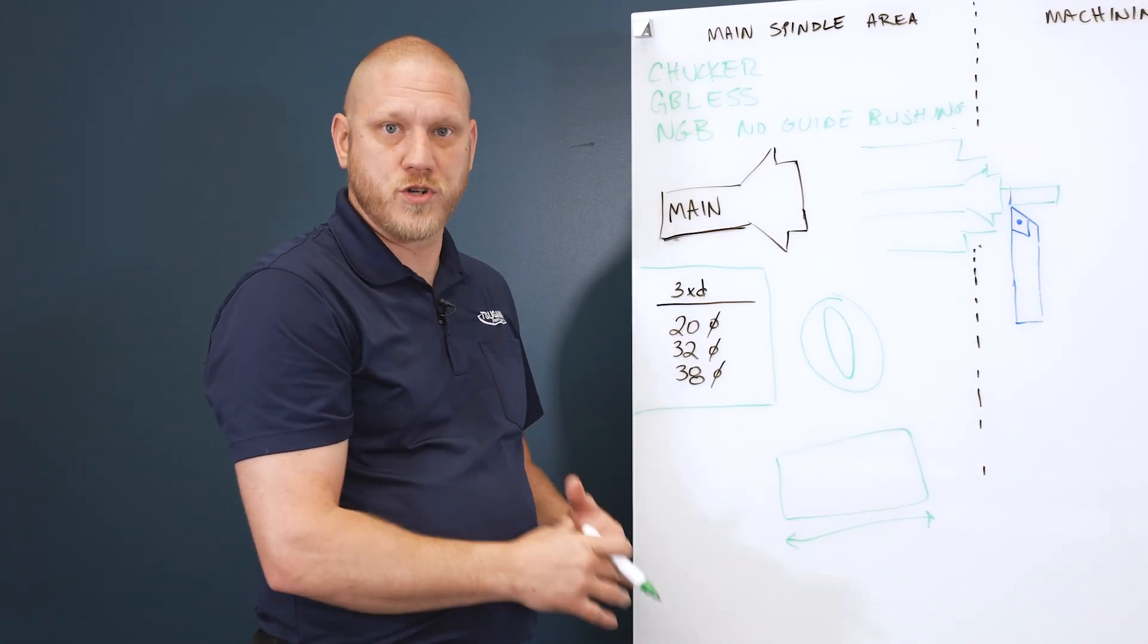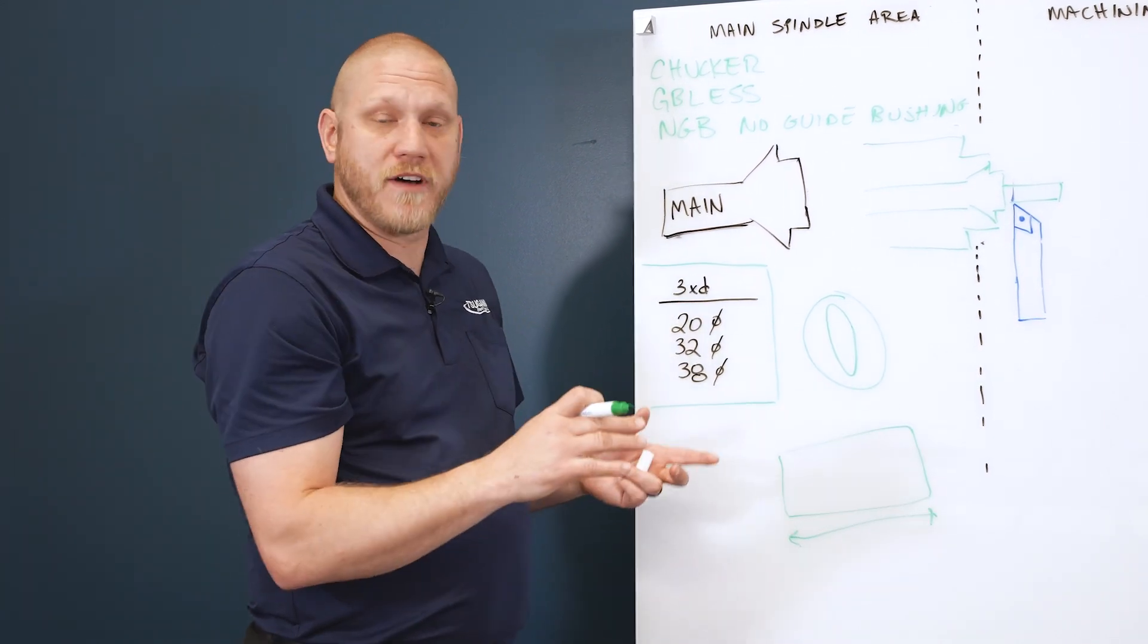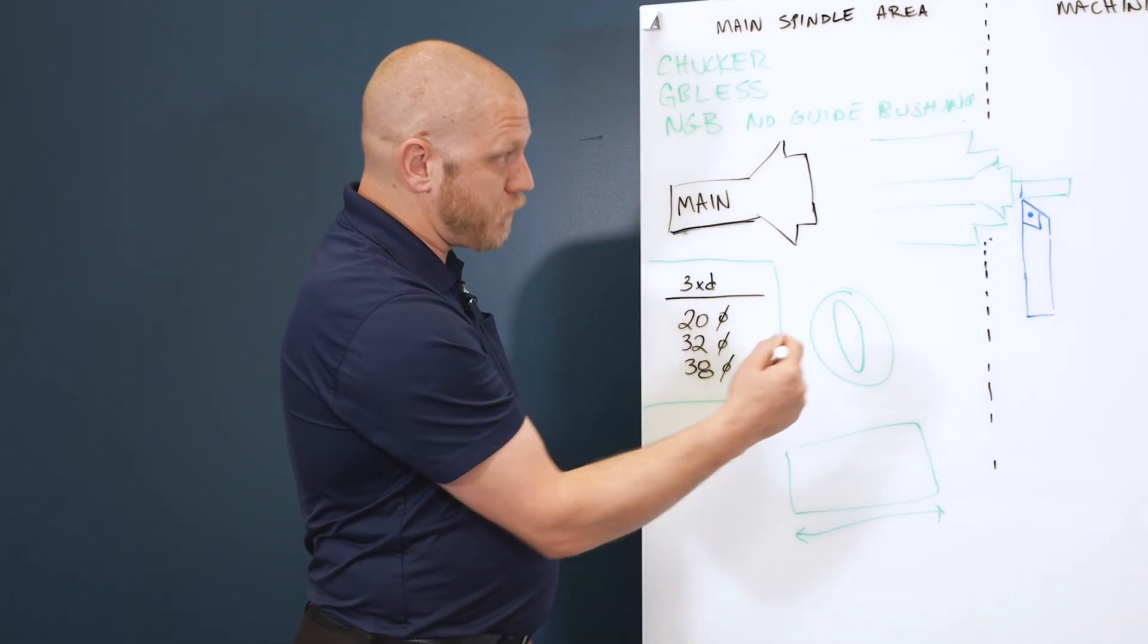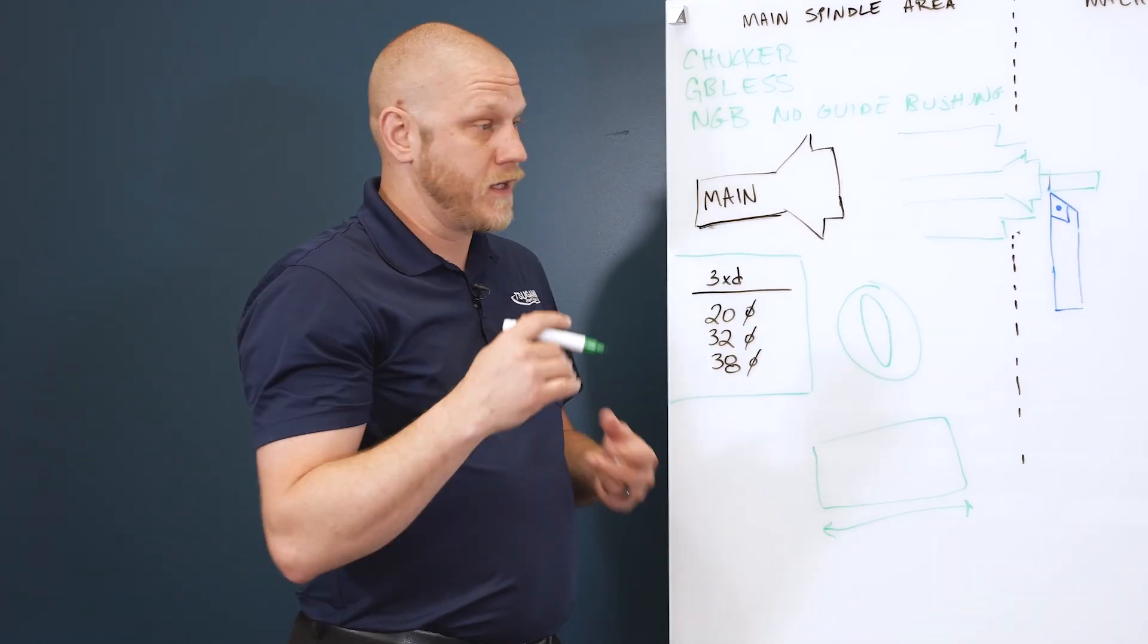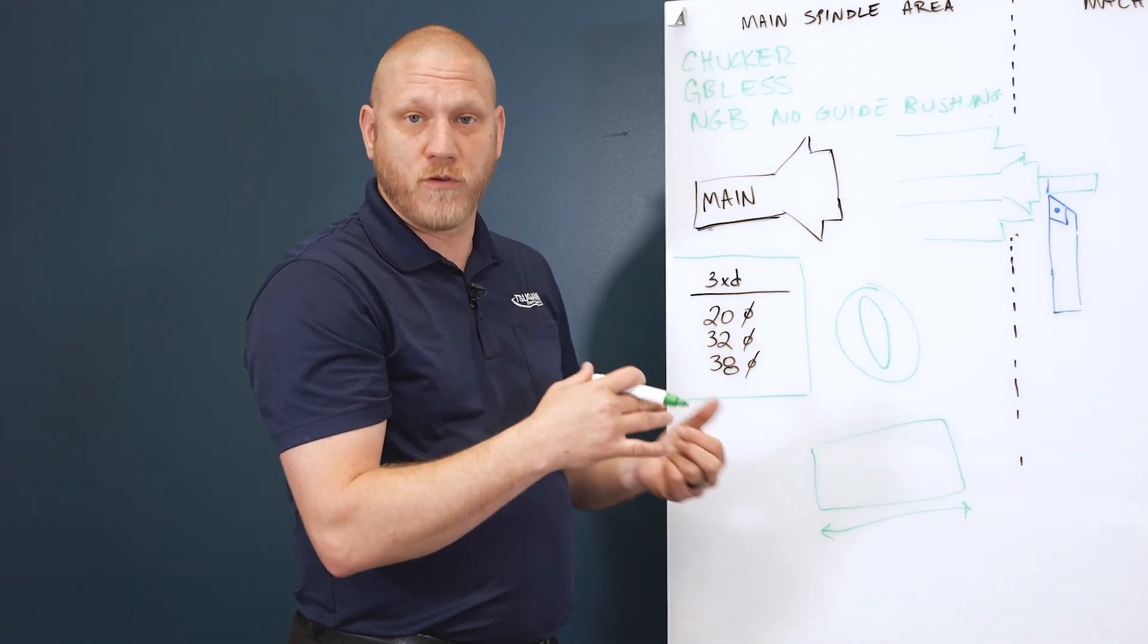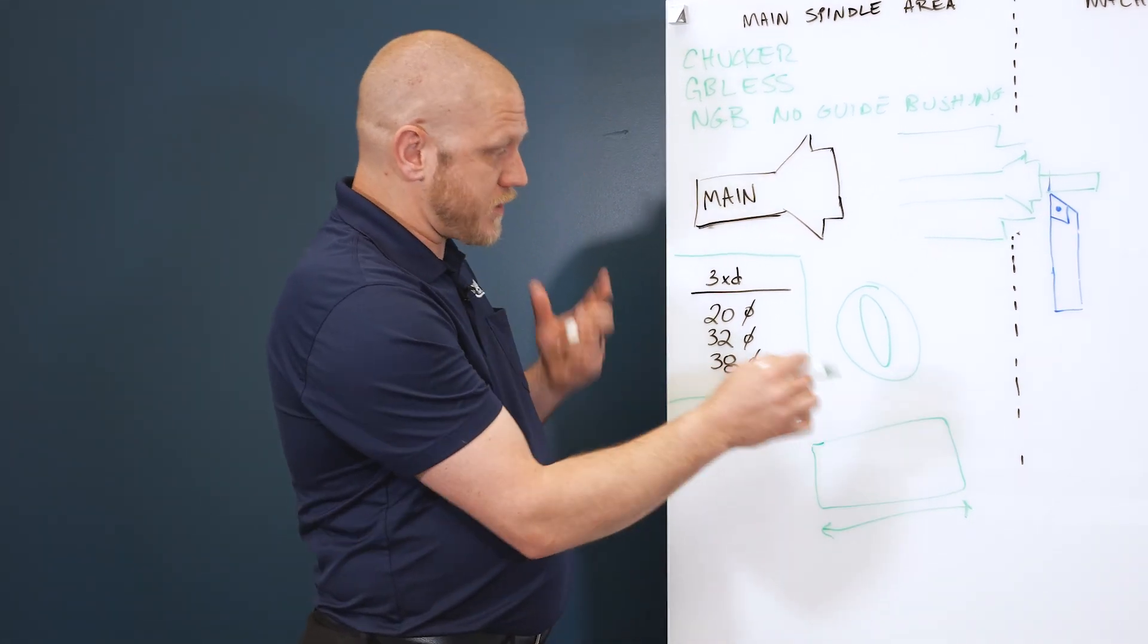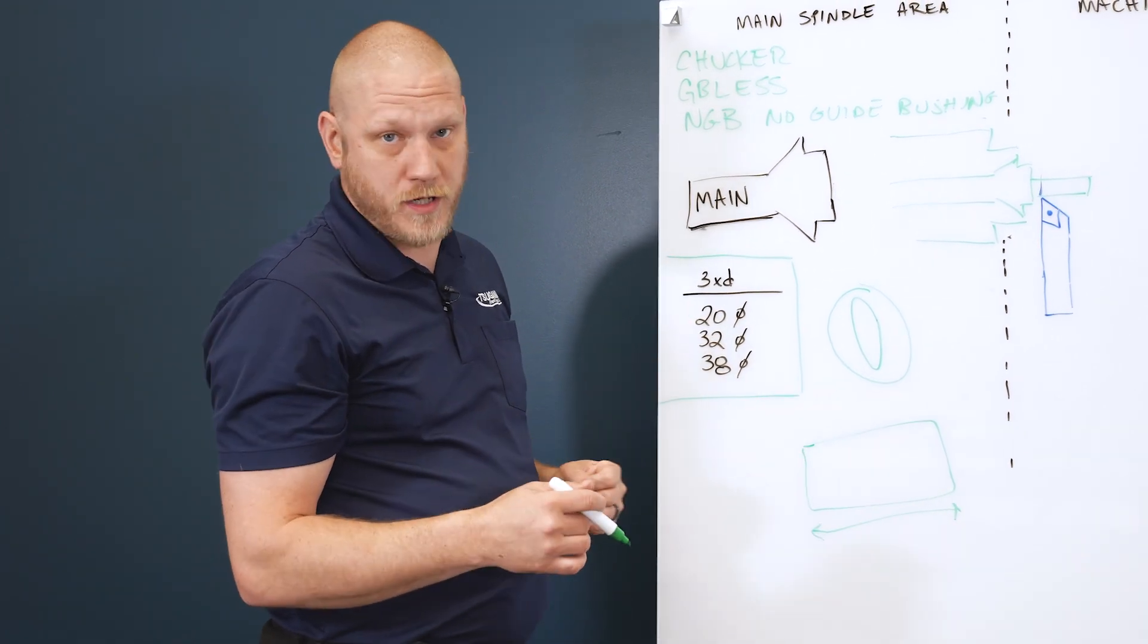Good news is 95% of Swiss machines out there, 99% of Tsugami machines out there, are chukar convertible. We can remove that guide bushing, put in chukar mode, we can take it out of chukar mode, put the guide bushing back in, all within 15 minutes. So we can change back and forth if needed. It's not a difficult task. You can run it in guide bushing mode if that part is better for guide bushing mode.